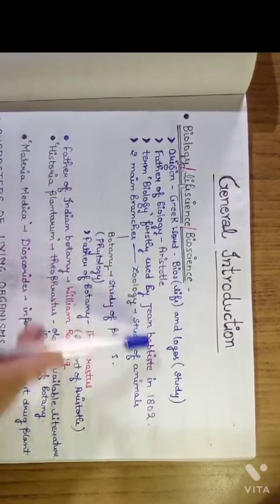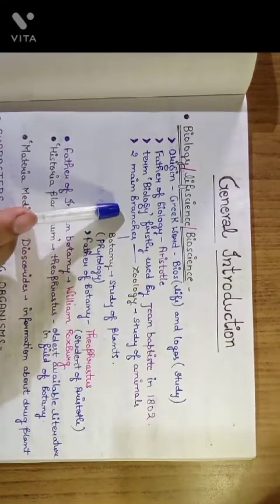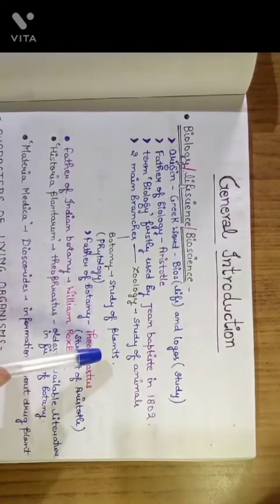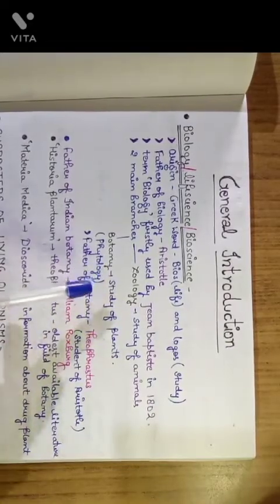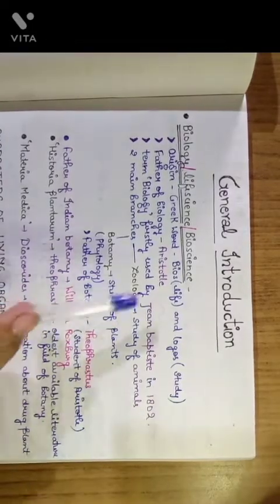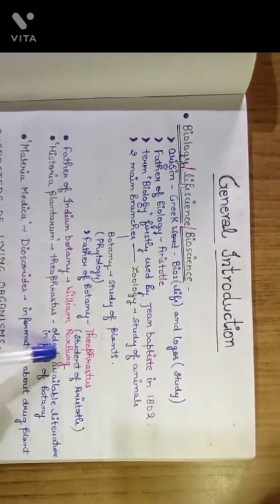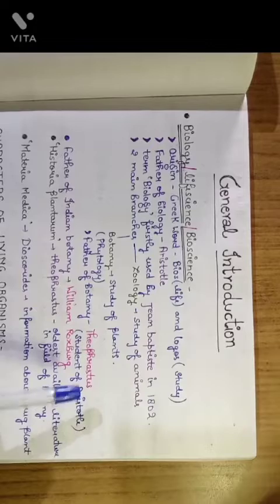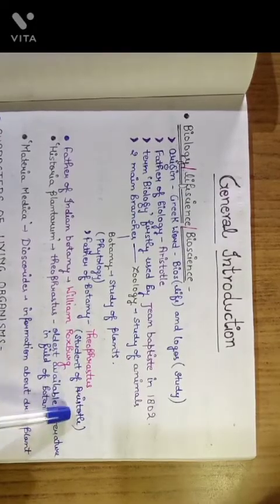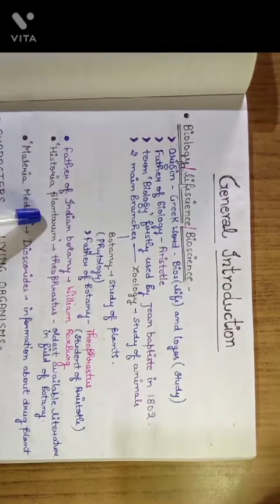The term biology was firstly used by Jean Baptist in 1802. There are two main branches of biology: zoology, the study of animals, and botany, the study of plants. Botany is also known as phytology and the father of botany is Theophrastus. Father of zoology is also Aristotle. Father of Indian botany is William Roxberg. We should also know that Theophrastus is the student of Aristotle.